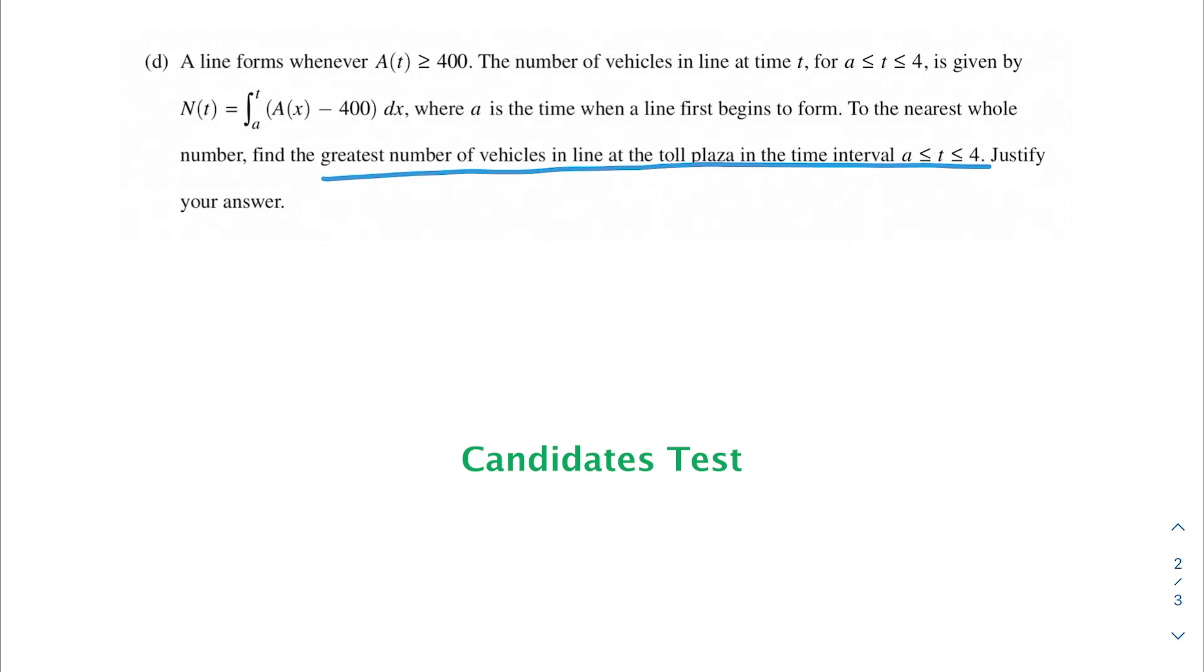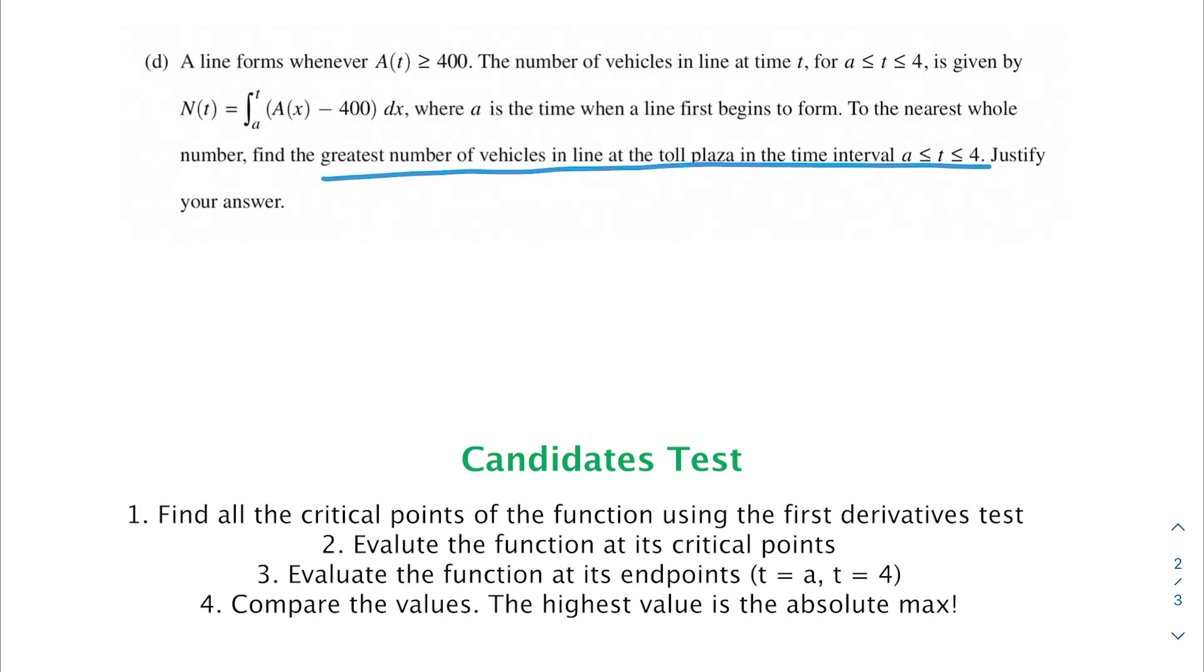This is a method where we can find the absolute maximum of a continuous and differentiable function defined over a closed interval. The first thing we want to do is find all the critical points of the function, and we're going to be doing this with the first derivatives test. This means we want to set the derivative of our expression equal to 0, and that will give us the peaks and valleys of our equation. This should make sense because when the derivative is 0, the rate is 0, that's a minimum or maximum.